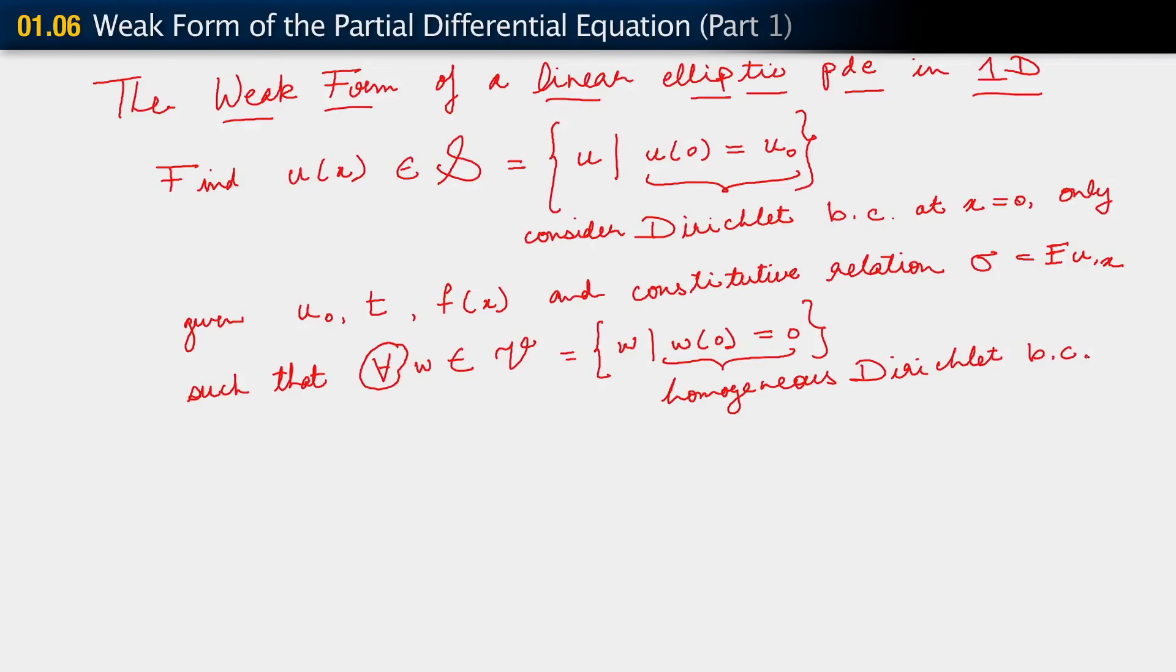All right, so let me read what we have so far. We're not yet done. Find u belonging to s, where s is that. Given u naught, t, f of x, and the constitutive relation sigma equals E u comma x. Such that, for all w belonging to v, where v is specified, the following holds now. What holds?